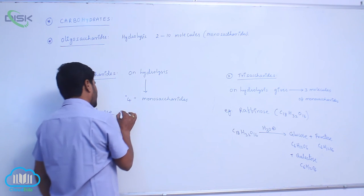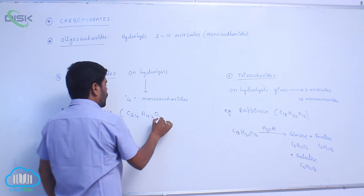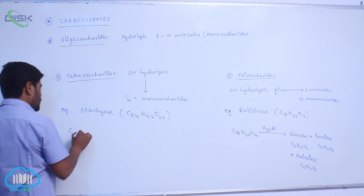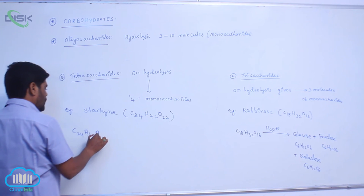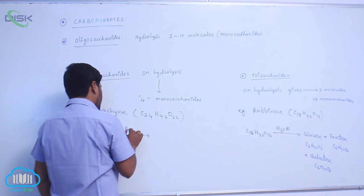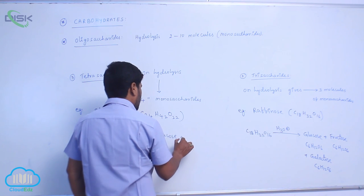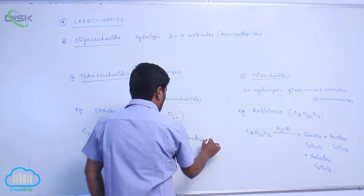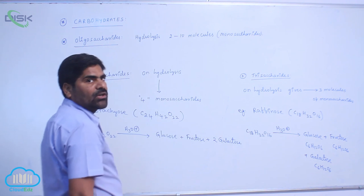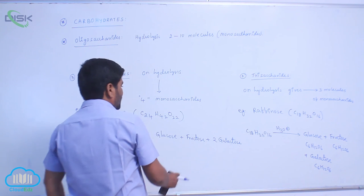Stachyose has molecular formula C24H42O22. On hydrolysis, stachyose gives one unit of glucose, one unit of galactose, one unit of fructose, and two molecules of galactose. So these are known as oligosaccharides — disaccharide, trisaccharide, and tetrasaccharide.